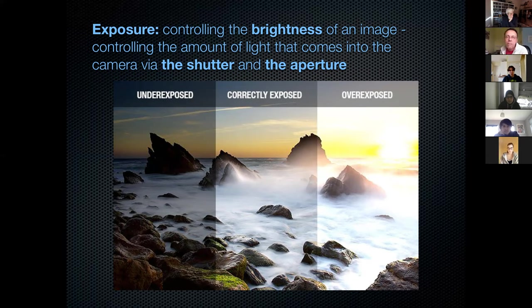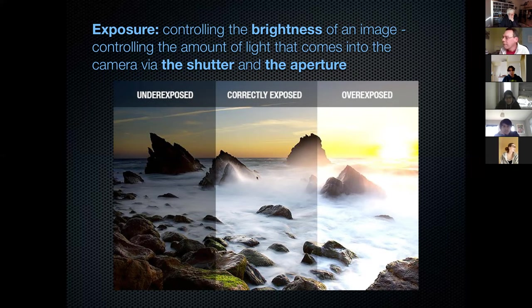Basically the exposure is how much light is coming into the camera to make your photographs. If too much light comes in, you get an overexposed picture, as you can see on the right-hand side. And if you underexpose — you don't get enough light in the camera — you get an underexposed photograph. So we're looking for something called correct exposure, which is when the light gives you a nice range of details in the highlights and the shadows.